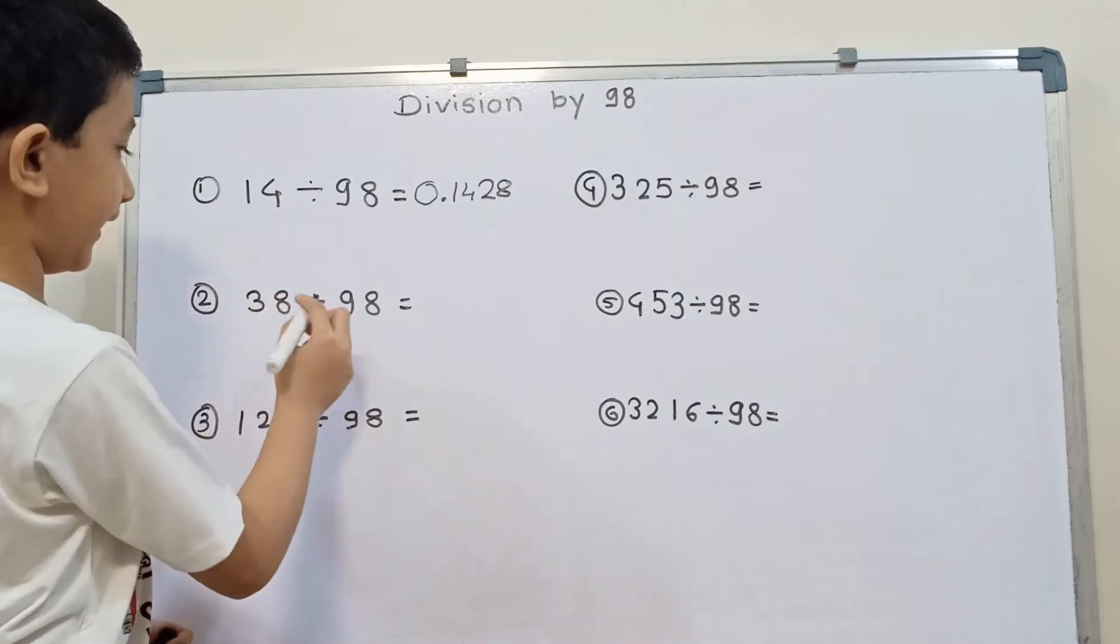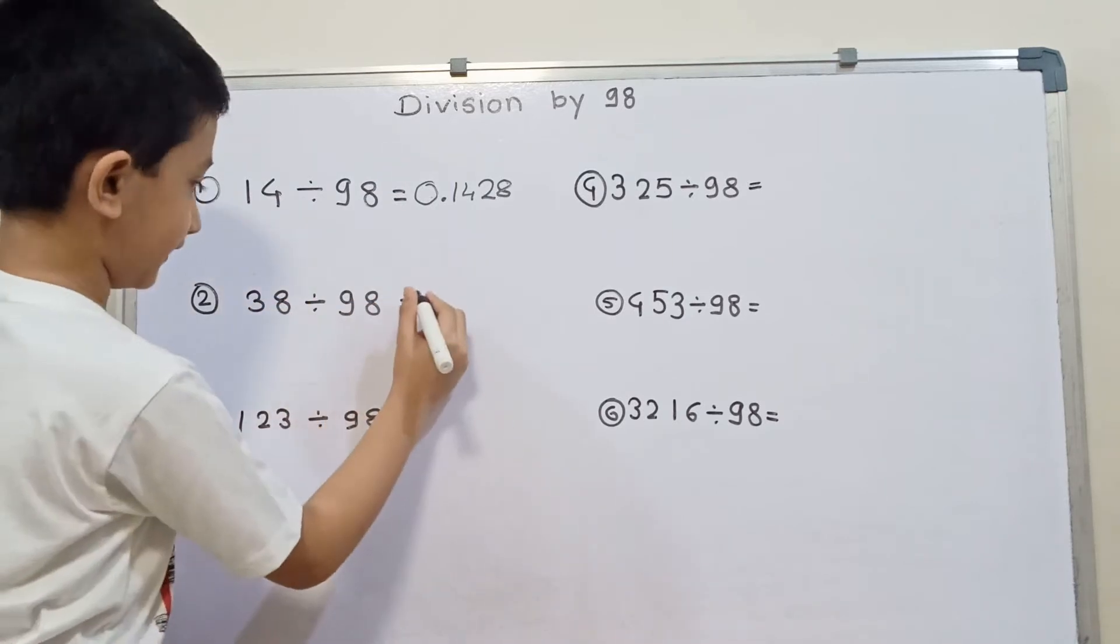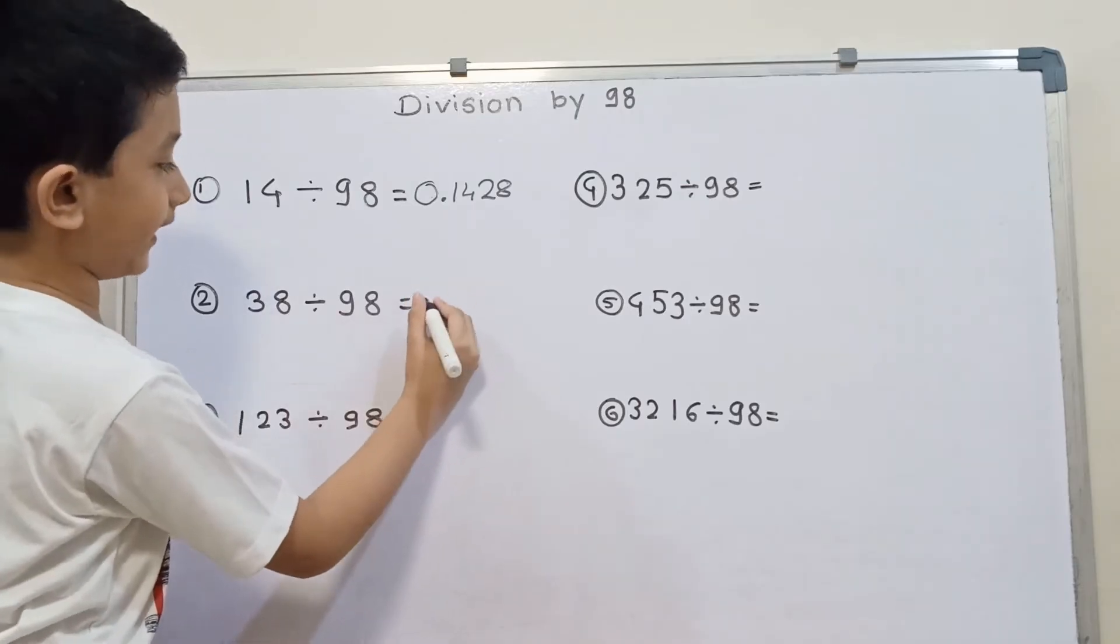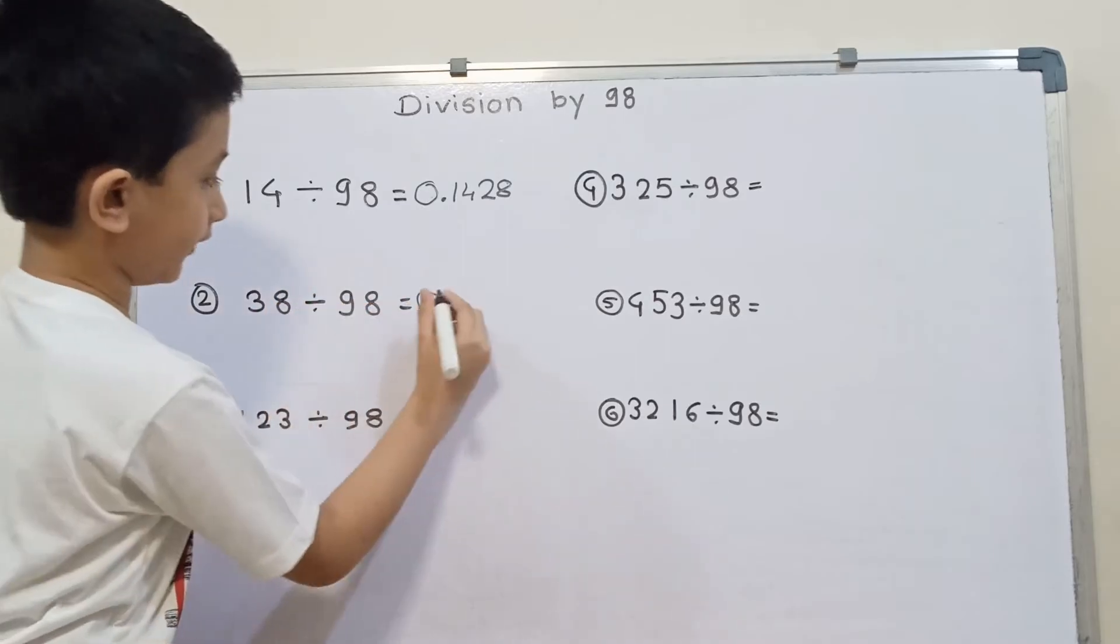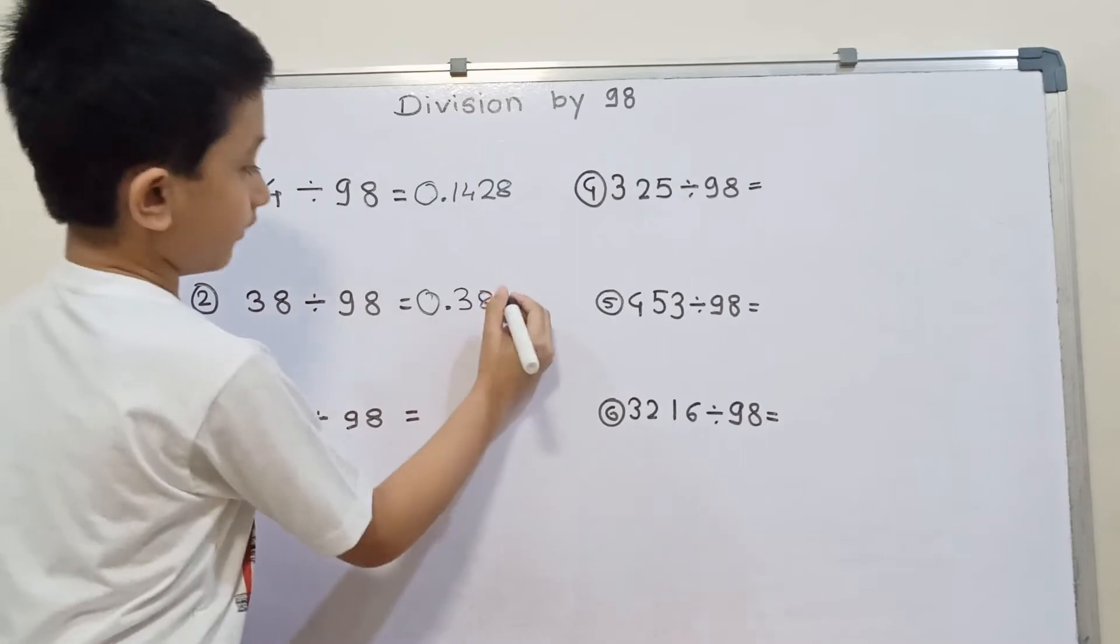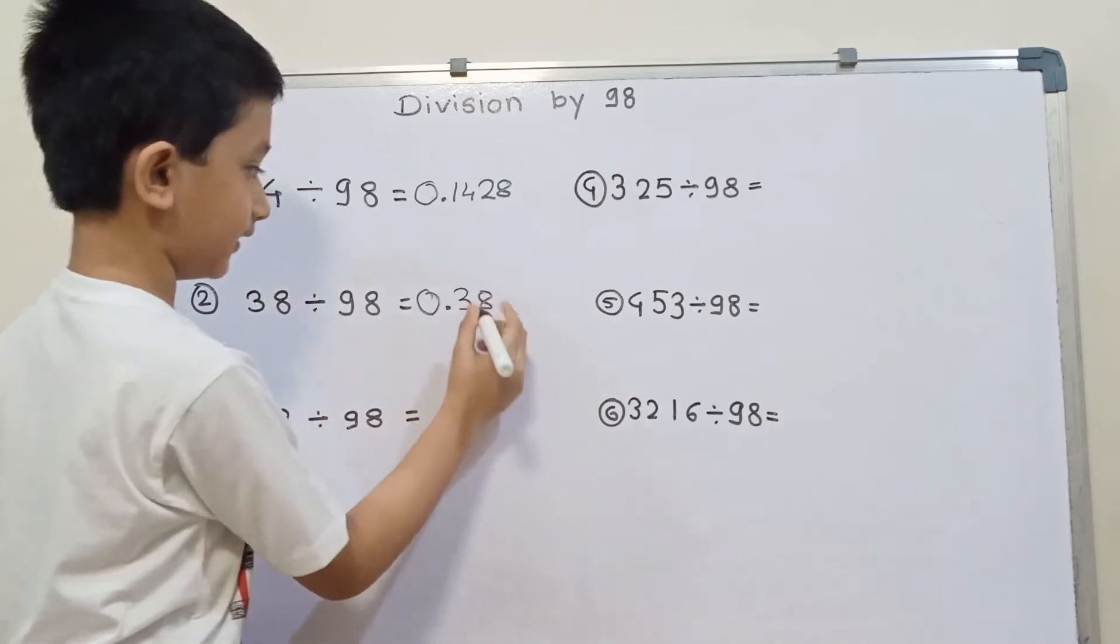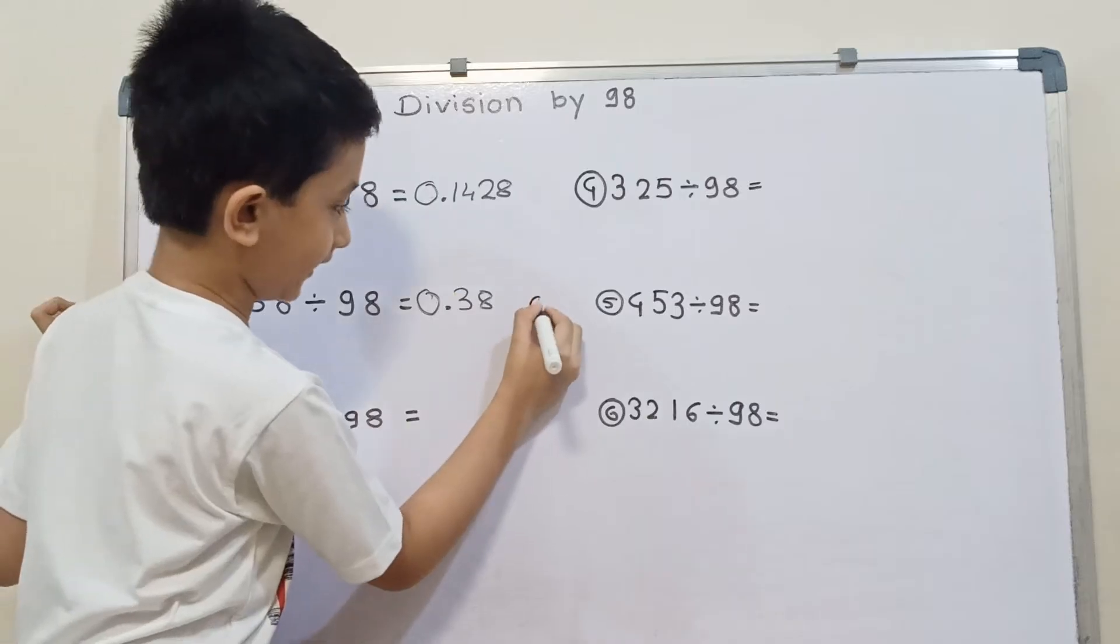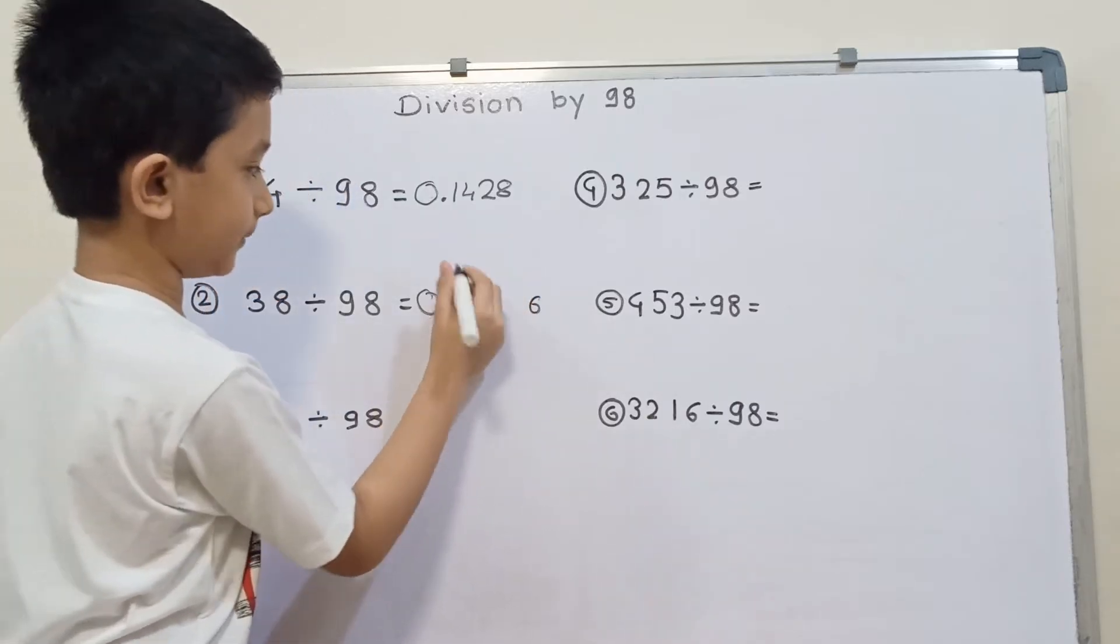Then 38 divided by 98. First 38 is lesser than 98. We will write here 0 and 0. Then we will write here 38. And then the double of 38 is 8 times 2 is 16 carry 1. And then 3 times 2 is 6 plus 1 is 7.